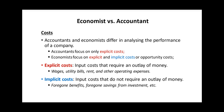Explicit costs are the type of costs that require an outlay of money, or some sort of physical payment of cash — for example, wages, utility bills, rent, and other operating expenses that require a physical payment of money.